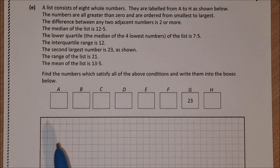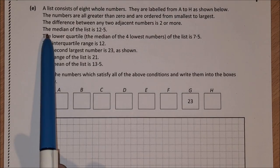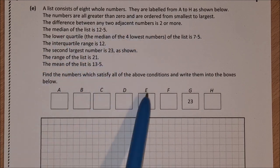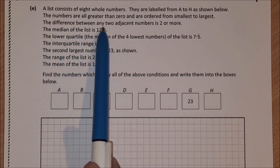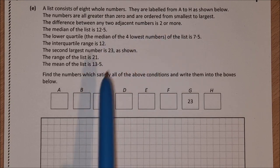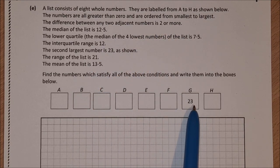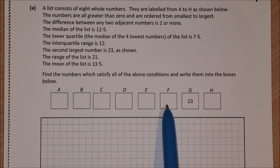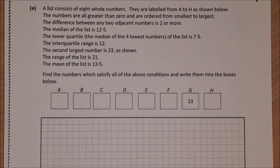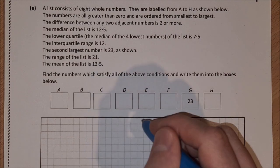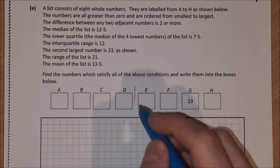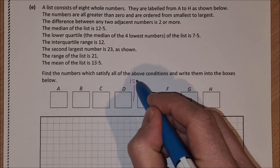Okay, so this is the solution to the problem. I'm going to start by reading through the rules again and writing some notes in. So the difference between any two adjacent numbers is 2 or more. For example, this is 23, this has to be at least 25, this has to be at most 21. The median of the list is 12.5. Well, I can write that in. The median is the number which splits the list in 2, and that's 12.5.